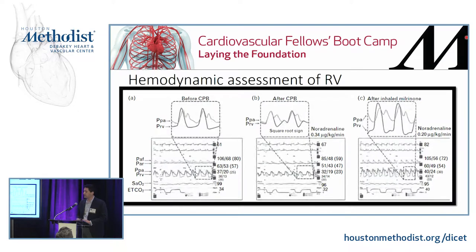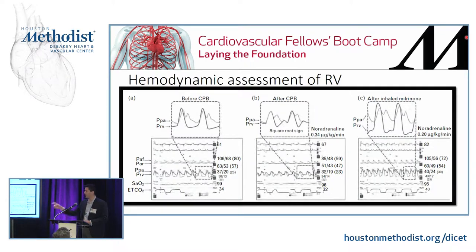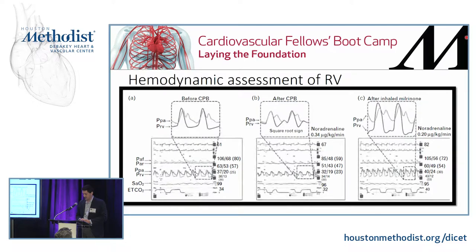Here's a clinical case where continuous RV waveform monitoring was very useful. Pre-bypass, you'd see a normal relationship between RV and PA pressures. After bypass, there's the beginning of a square root sign where the RV diastolic pressure was equilibrating with the PA. They gave milrinone and things improved immediately. Notably, between when things were going well pre-bypass and poorly after bypass, the PA pressures were essentially the same — actually slightly lower when things were going poorly. So low or normal PA pressures doesn't necessarily mean things are going well.